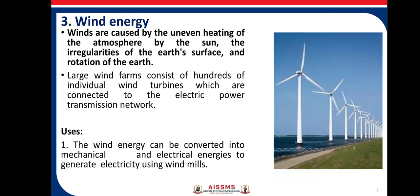The third example of renewable resources is wind energy. Wind is caused by the uneven heating of the atmosphere by the sun, the irregularities of the earth's surface, and rotation of the earth. Large wind farms consist of hundreds of wind turbines connected to the electric power transmission network as shown in the image. Wind energy can be converted into mechanical and electric energy to generate electricity using windmills.